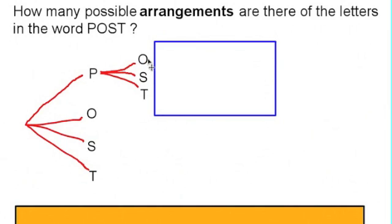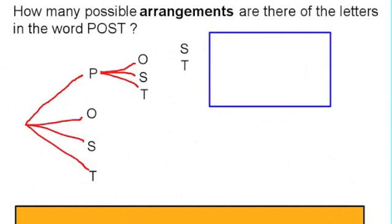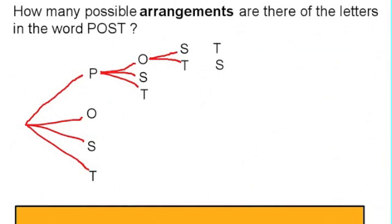Then once you've used the P and the O, you've only got the S and the T left for your third letter and once you've used P, O and S the only letter remaining is the T.